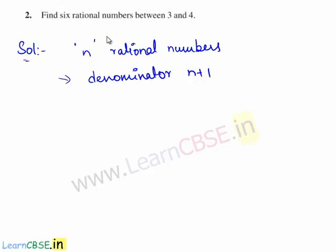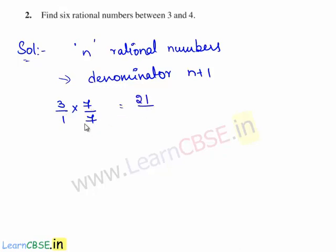Here in the question, we need 6 rational numbers between 3 and 4. So we express the rational numbers 3 and 4 with denominator as 7. Let's multiply 3 by 1 with 7 on both the numerator and denominator. This gives 3 times 7 is 21 by 1 times 7 is 7. Hence 3 is expressed as 21 by 7.